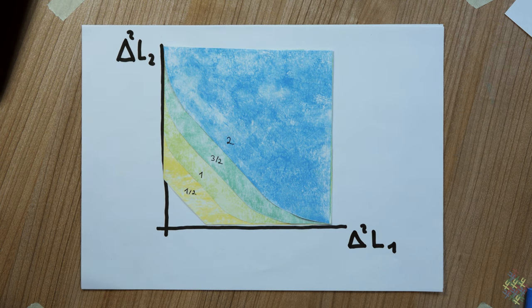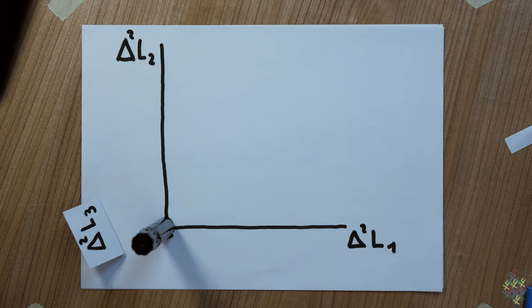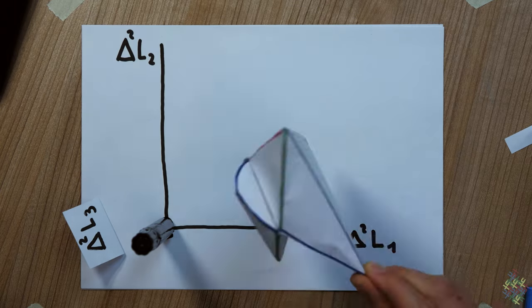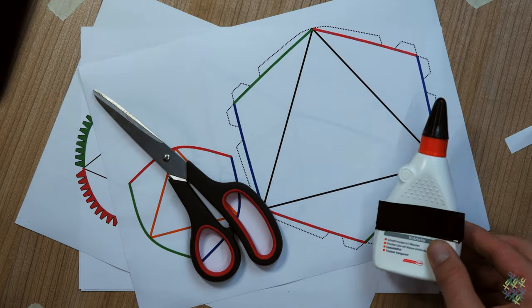Actually, there is nothing to stop you from doing the same thing for all three components, so you get 3D objects. Here is the example for s equal one. You can also build this model by using the paper cut-out in the supplement.